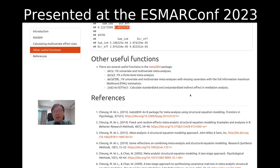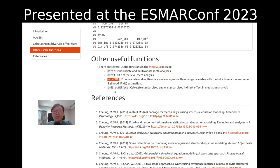In this brief tutorial, we have illustrated only a few functions. There are several others in the MetaSAM package — for example, meta functions for univariate and multivariate meta-analysis, meta functions for three-level meta-analysis, a meta-FIM function for univariate and multivariate meta-analysis allowing missing covariates to be estimated with full information maximum likelihood, and an indirect effect function to calculate standardized and unstandardized indirect effects in mediation analysis.